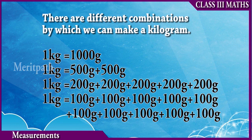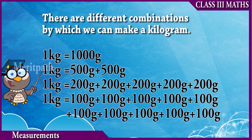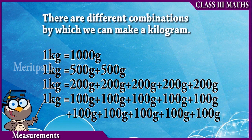There are different combinations by which we can make a kilogram. 1 kilogram is equal to 1000 grams. 1 kilogram can also be written as 500 grams plus 500 grams. It can also be represented as five 200-gram weights: 200 plus 200 plus 200 plus 200 plus 200. So, five 200-gram weights make 1 kilogram. Similarly, 1 kilogram equals ten 100-gram weights, since 100 grams written 10 times is equal to 1 kilogram.